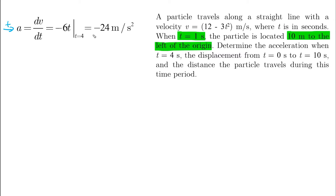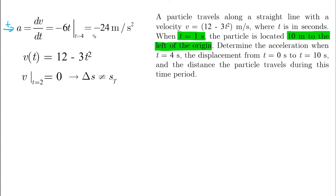Next, to find the displacement and total distance, we have to check whether the velocity becomes zero at any time between 0 and 10 seconds. If we set V(T) equals zero, you'll easily see that T equals 2 gives V equals zero, and this means the displacement will not be equal to the total distance.